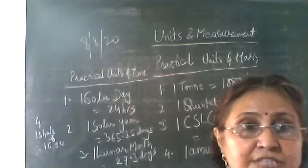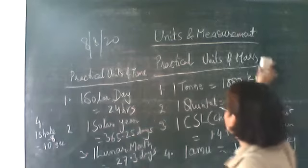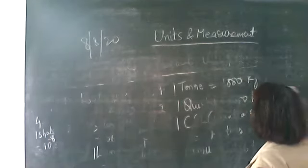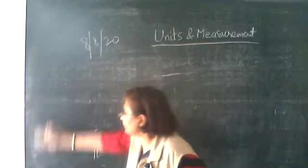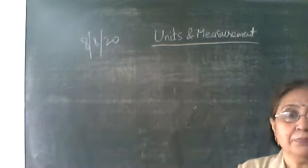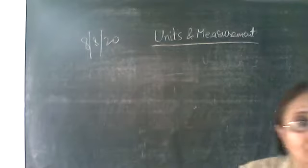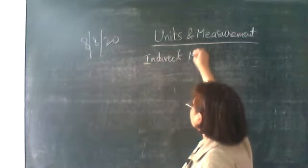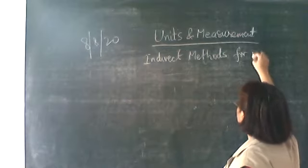Now we will discuss some indirect methods of measurement, specifically indirect methods for the measurement of length. For example, if we have to find the distance between the sun and the earth, or between the earth and the moon, it is not possible to measure directly using an instrument, so some indirect method has to be employed.